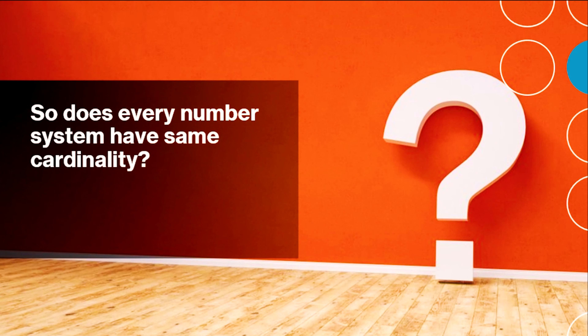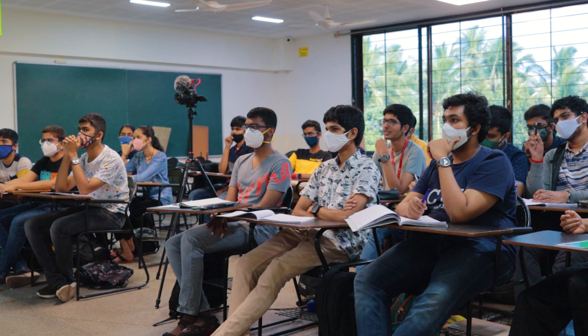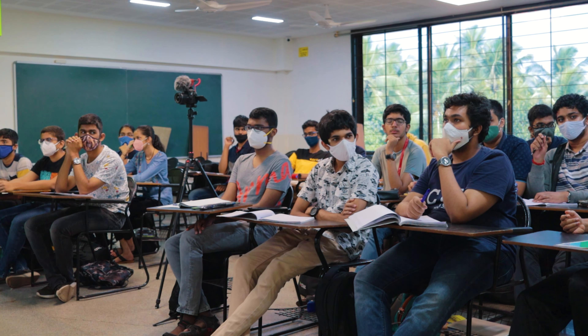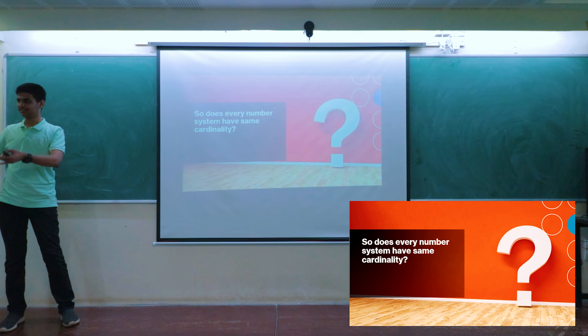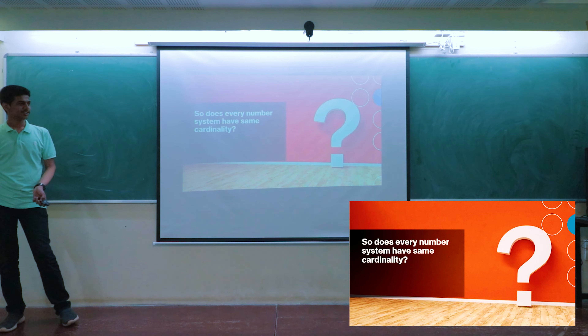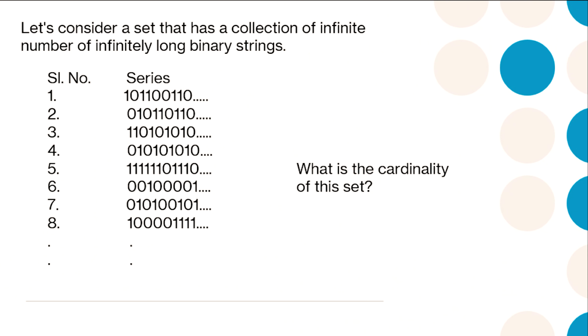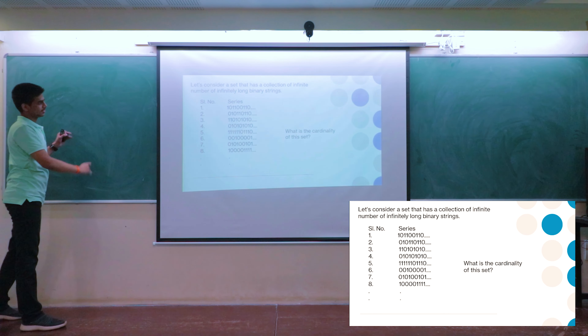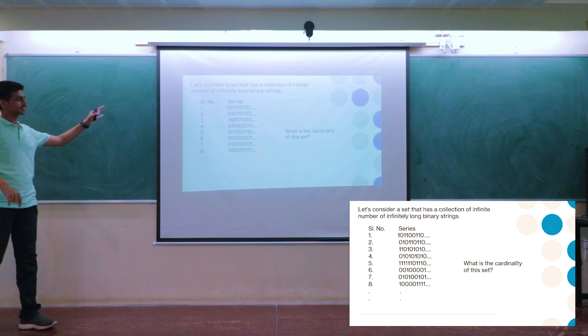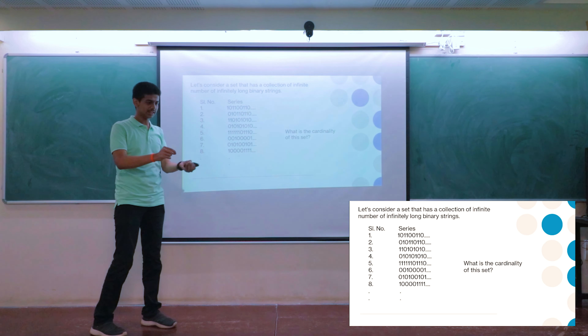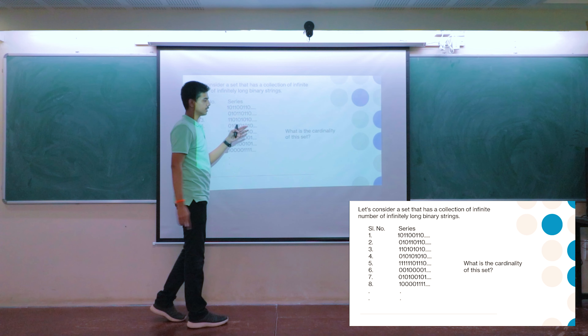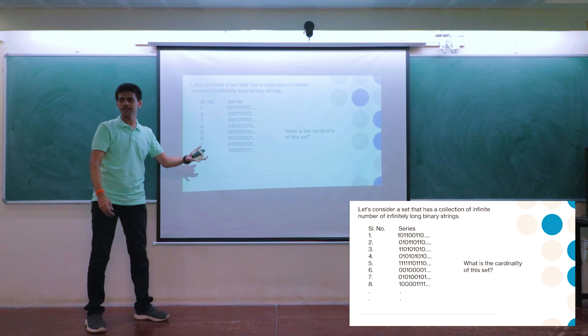A good question: does every number system have the same cardinality? We'll answer this by the end. Consider infinite binary strings — just 1s and 0s, like a computer. There are n digits in each string and infinitely many such strings. What will be the cardinality of this set?